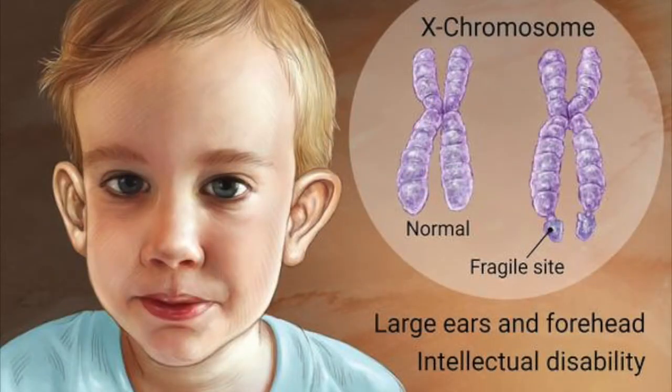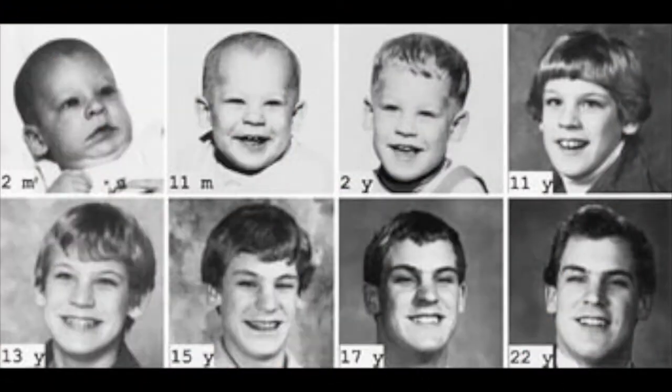Fragile X syndrome is a genetic disease that is a common cause of intellectual disability and autism. About one in every 4,000 males and one in every 8,000 females has Fragile X syndrome.